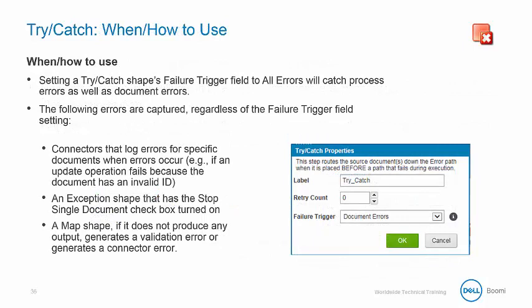The try-catch shape can be configured to catch process or document errors. There are some errors that are caught regardless of the failure trigger in the try-catch properties: connectors that log errors for specific documents when errors occur, an exception shape that has the stop single document checkbox turned on, and a map shape if it does not produce any output or generates a validation error or a connector error.